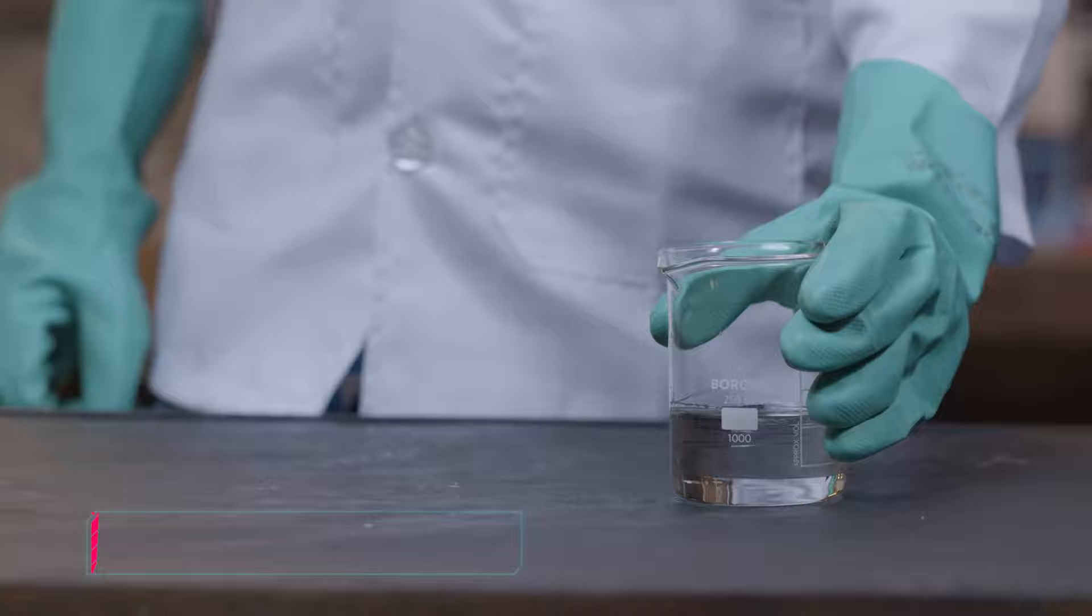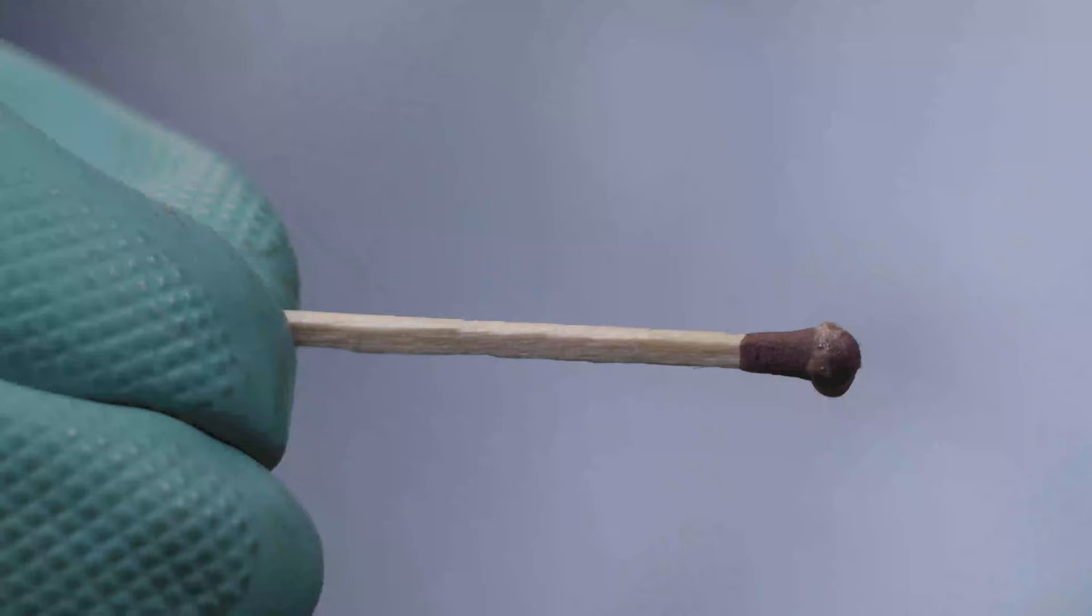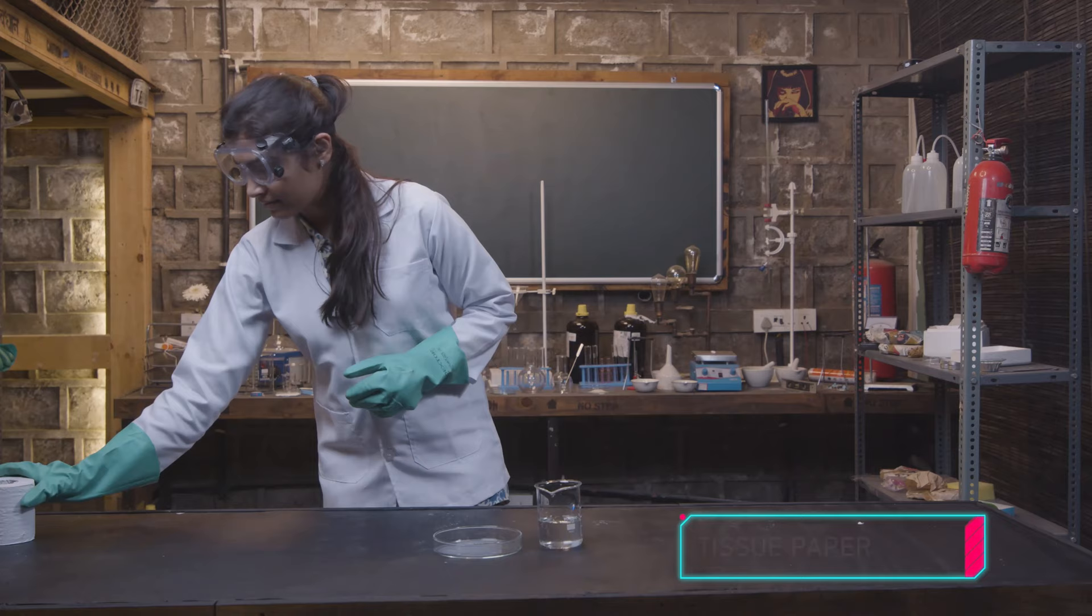Next up, matchsticks. Pour sulfuric acid in a beaker and dip the head of a matchstick into the acid. And we mean only the head. Hang on to the wooden part carefully. Now watch how within just a few seconds it automatically bursts into flames. Pretty sight, huh?